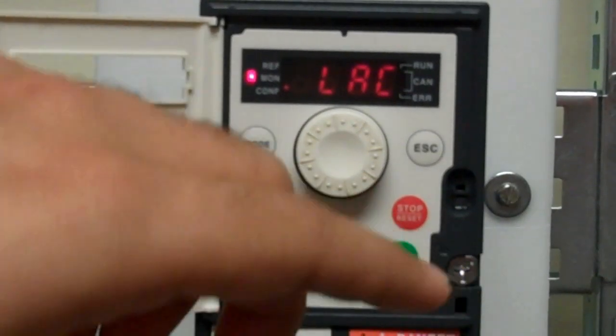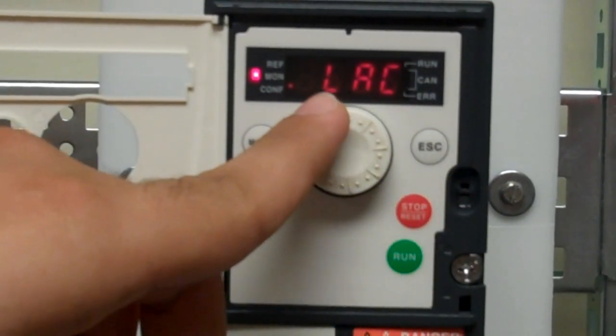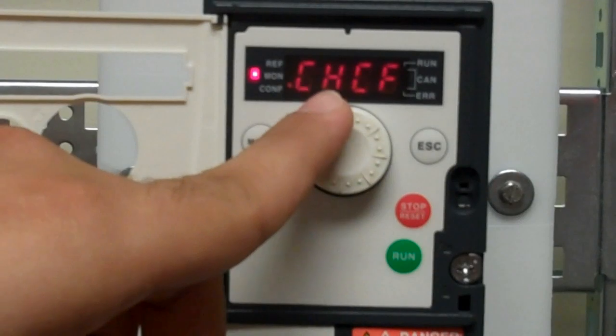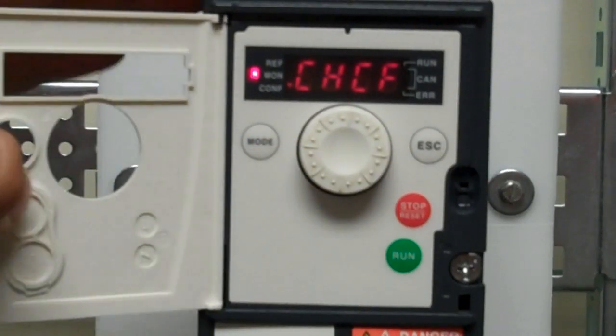Once LAC is on level three, escape back to LAC and scroll down to a parameter labeled as CHCF.